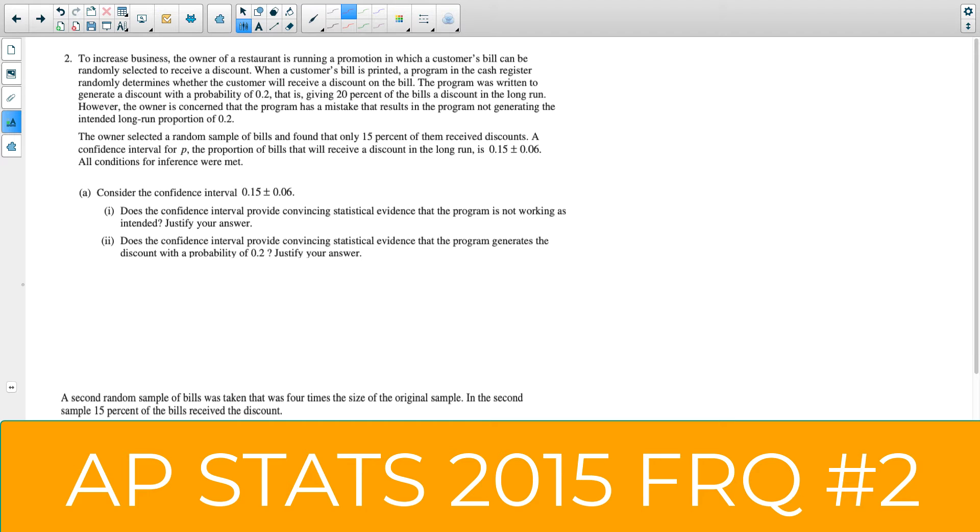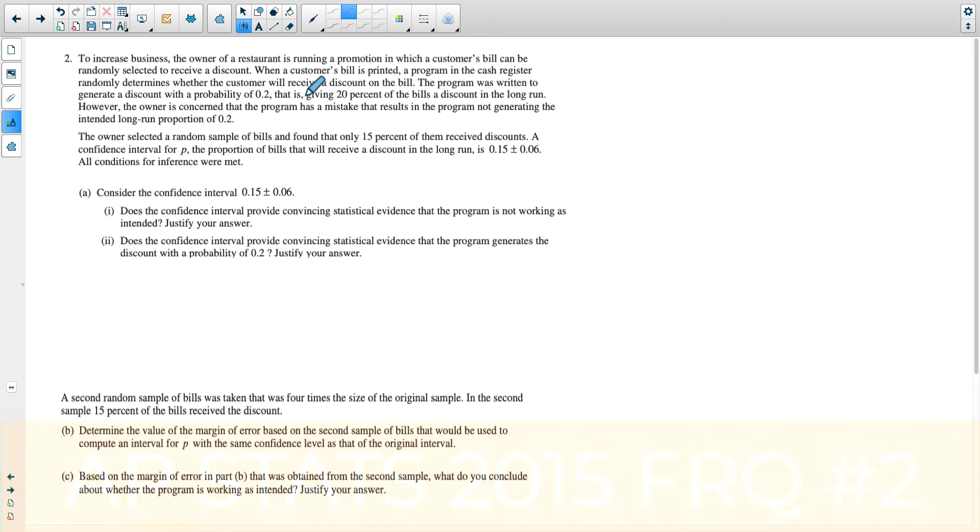Let's look at number two from 2015, the free response question for AP Stats. Go ahead and pause the video and read the problem if you haven't already. What's going on is we have a business that wants to give a discount 20% of the time randomly, and the discount is 20%. I think they did that on purpose to make it confusing. But the owner is not sure if it's working. He found that only 15% of their customers received a discount, so he took a sample and created this interval.